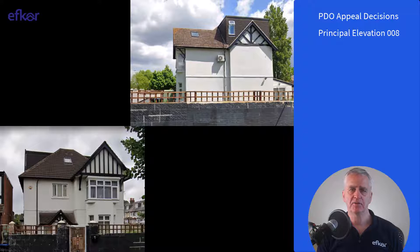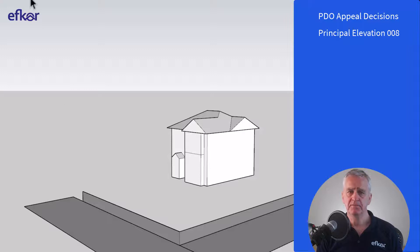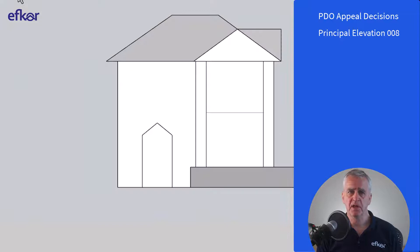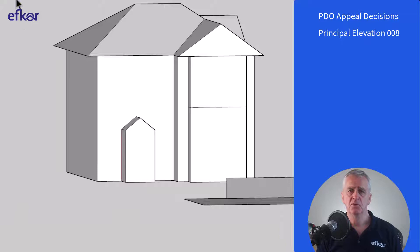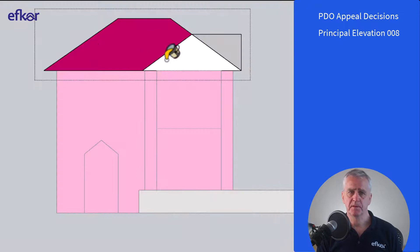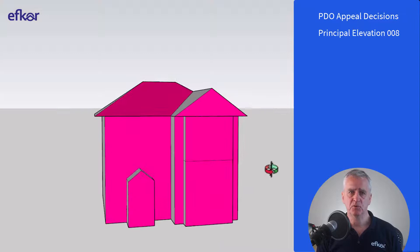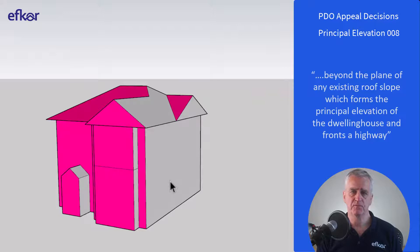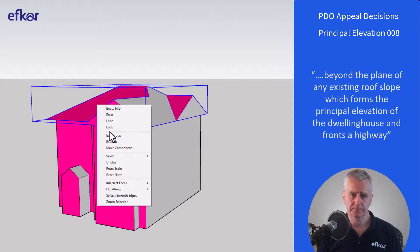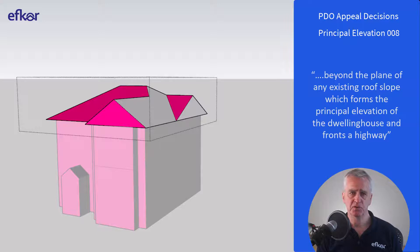That sounds straightforward. Let's switch to a 3D model to get a clearer look. Here's a perspective view showing the side elevation and the front elevation, which has been declared to be the principal elevation. Let's colour the walls and roofs that form the principal elevation. You can add dormer windows under Class B of the permitted development order as long as they are not beyond the plane of any existing roof slope which forms the principal elevation of the dwelling house and fronts a highway. There are two roof slopes which form the principal elevation of this dwelling house and which also front a highway — this one and this one.